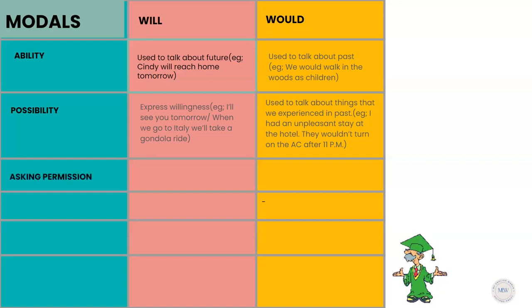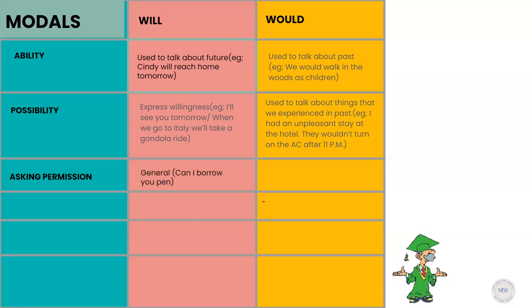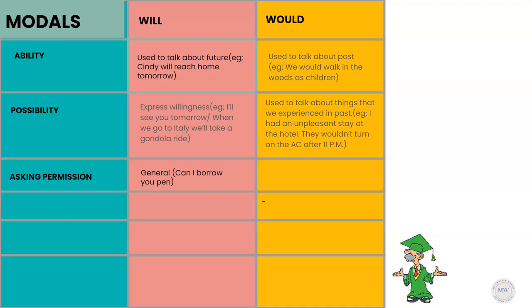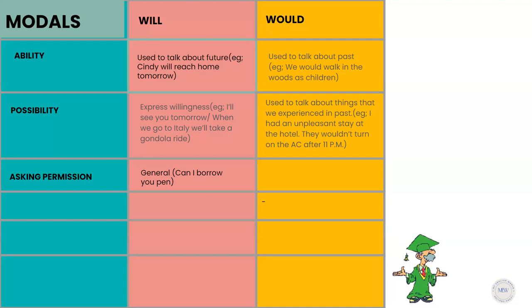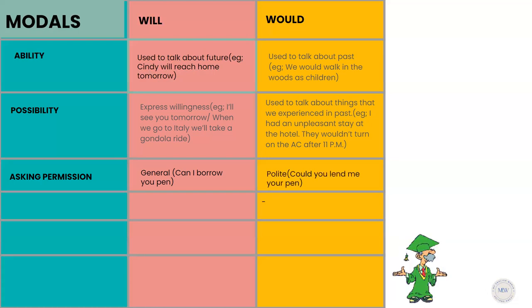That shows would expressing possibility in a negative way when using wouldn't instead of would. Will and would are also used to ask permission. For example: Will you come with me? or Will you give me your car? Here you are asking permission. Would, on the other hand, is used to make polite requests — for example: Would you lend me your pen?